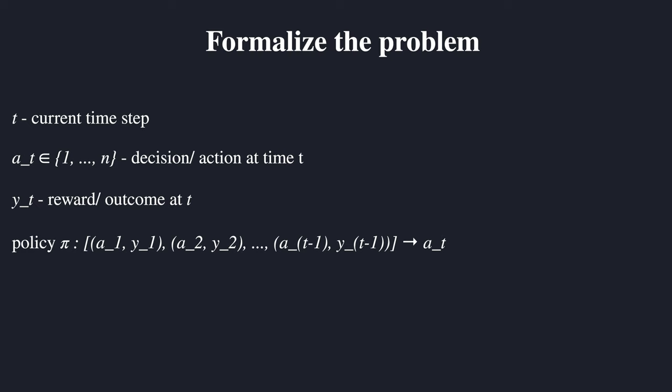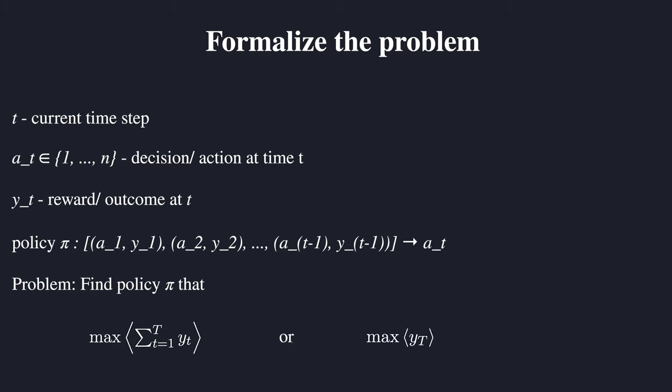A strategy, or more commonly known as a policy π, maps all the history — everything that we have learned before — to a new decision. This is on the most general level and can be implemented in different ways. It literally only means that based on what the agent has learned, it will predict the next action to take. So the agent chose action A_1 at time step one and got reward Y_1, then chose another action and got a reward, and so on up to time step T minus one. The problem is to find a good policy π that will, for example, maximize the sum of all rewards or maximize the reward achieved in the final step — though this will always be very dependent on the use case.